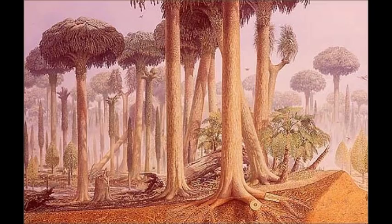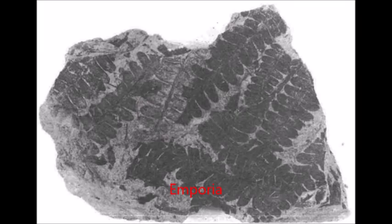Back to the pollen cones: from the Carboniferous, pollen cones from Walchian conifers, such as Emporia, provide clues to the ancestral morphology of all conifer pollen cones.